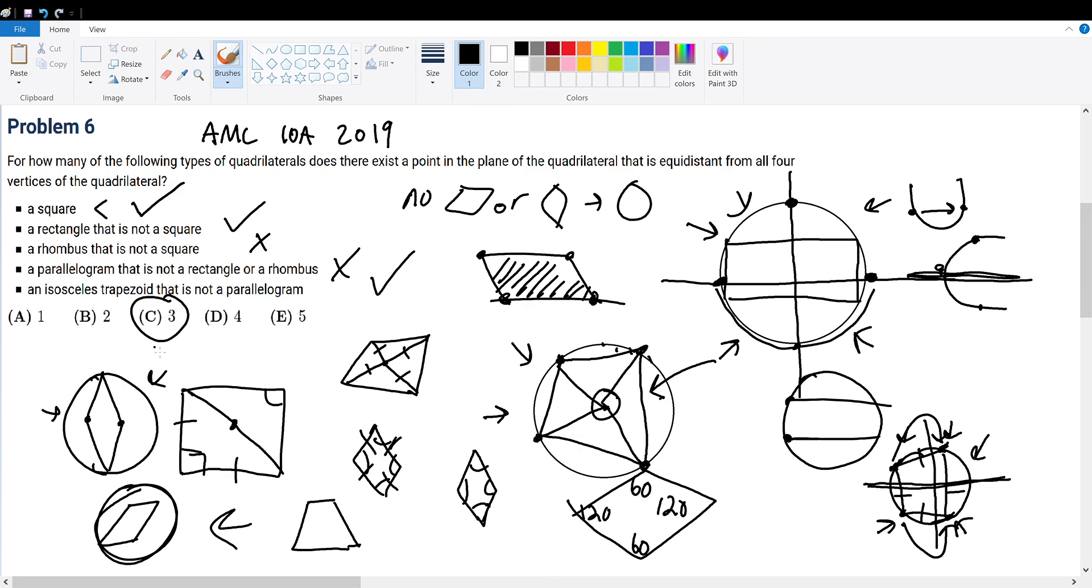This just goes to show you the amount of geometry required with an AMC-10. Make sure to understand your geometry, but nonetheless, the answer is C.